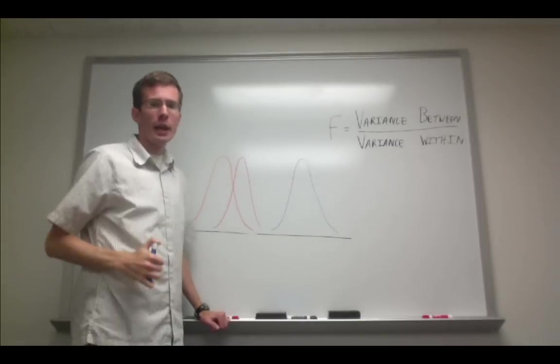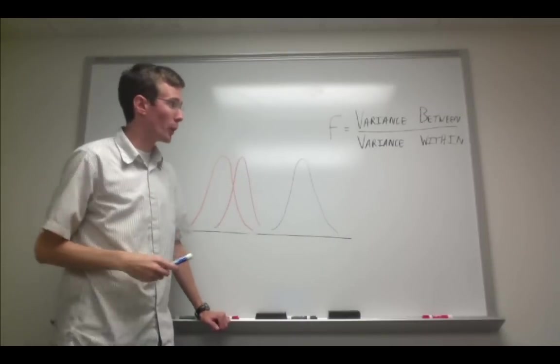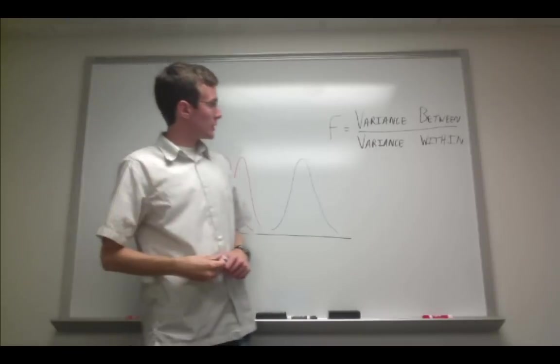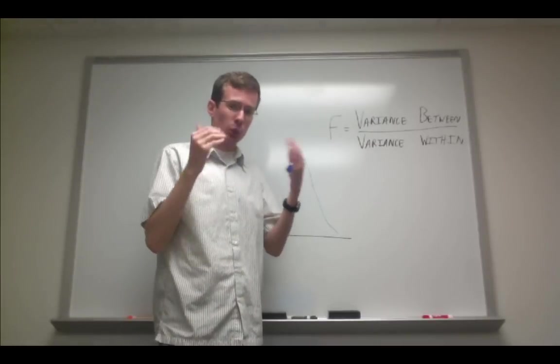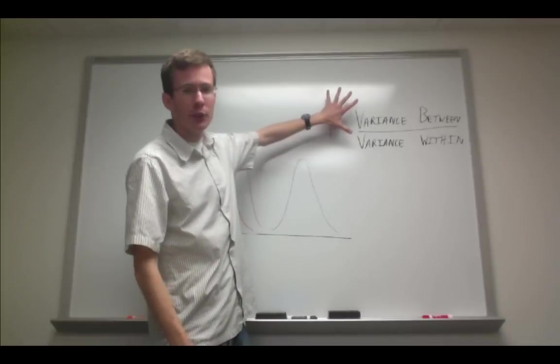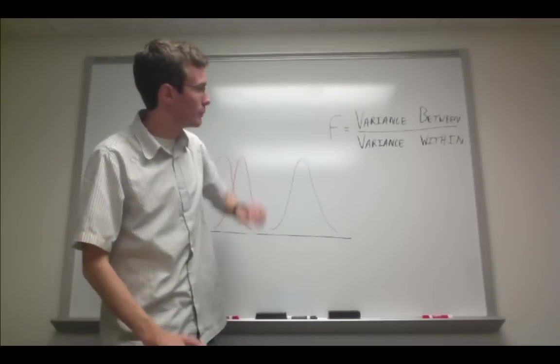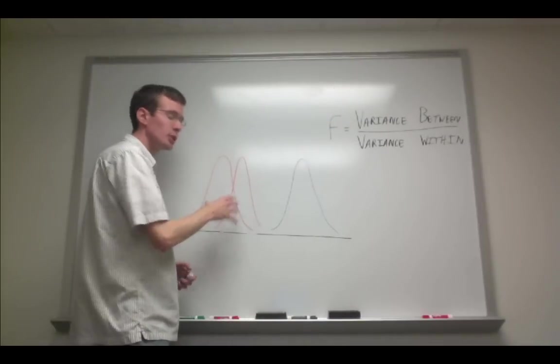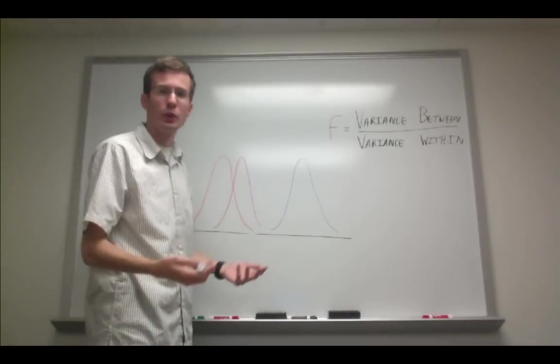We're going to get into calculating how you do that in a later tutorial. But conceptually, what an F-test, or analysis of variance is, is it's a ratio of variances between these groups. So you take the variance between the groups and you compare it to the variance within the groups.